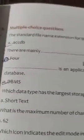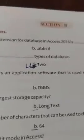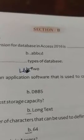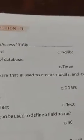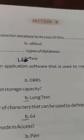Now the objective questions from here. A standard file name extension for a database in Access is — options are: dot secdb, dot abbcd, dot abdbc. The answer is dot secdb. There are mainly two types of database — the answer is 2, with options being 4, 2, and 3.